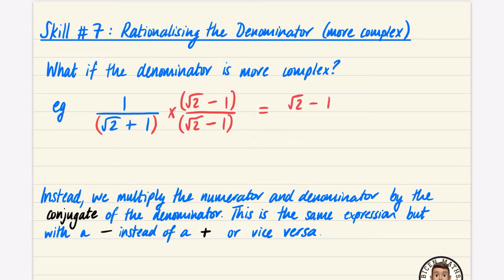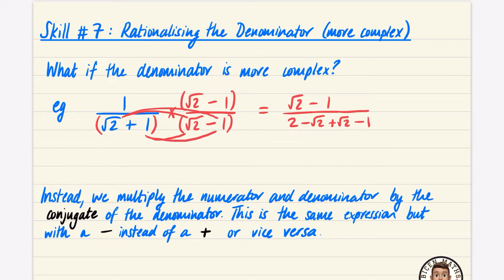The numerator is just going to be root two minus one. For the denominator you need to be more careful — you've got root two times root two which is two, root two times minus one which is minus root two, one times root two which is plus root two, and one times minus one which is minus one. The plus root two and minus root two cancel — that's always going to happen with this pattern. All that's left is root two minus one over two minus one, which is one.